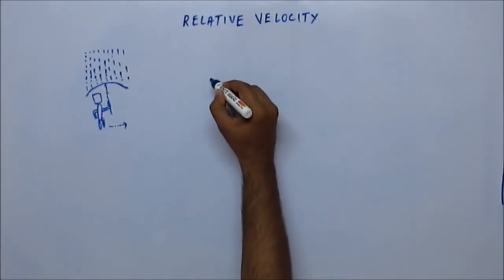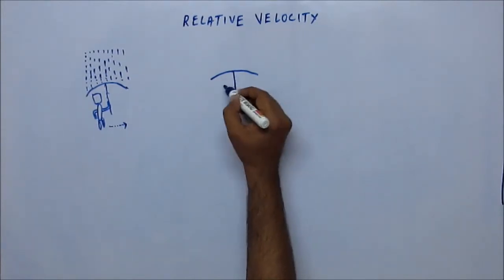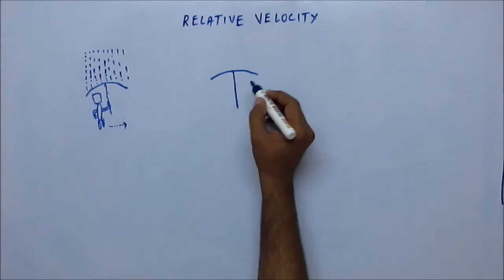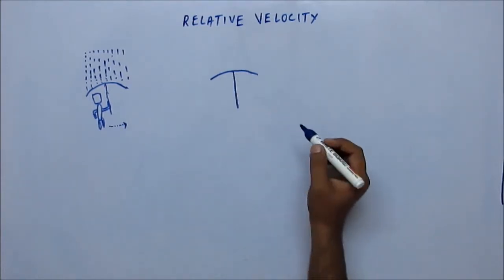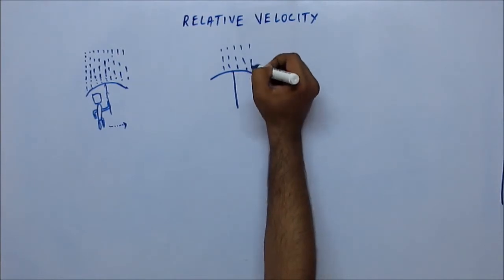This is not very difficult to understand from intuition. Suppose this is how the orientation of the umbrella is and the rain indeed is coming vertically downwards.